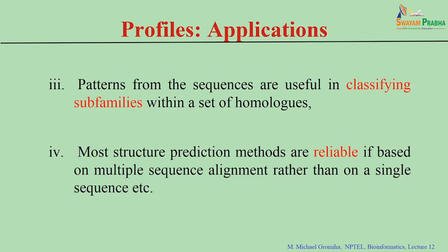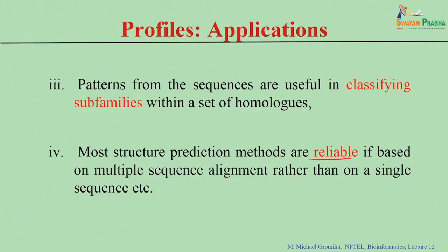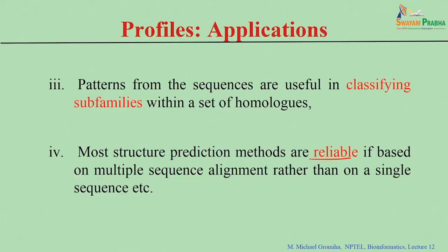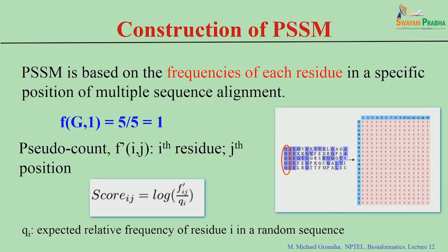You can see patterns useful for classifying subfamilies within a set of homologous sequences. Various secondary structure prediction algorithms — whether predicting accessibility or binding sites — are more reliable when using multiple sequence alignment rather than a single sequence. Using a multiple sequence alignment, the prediction results are more reliable than using just a single sequence.